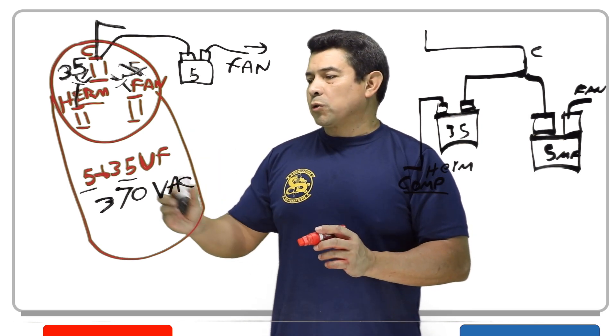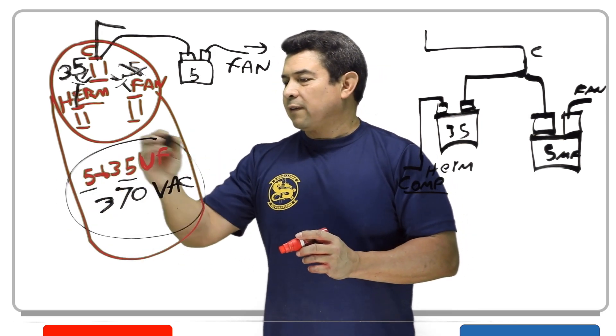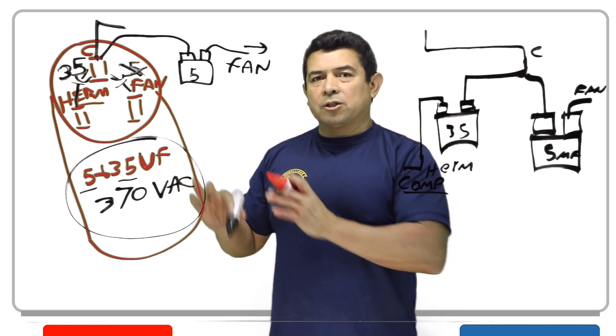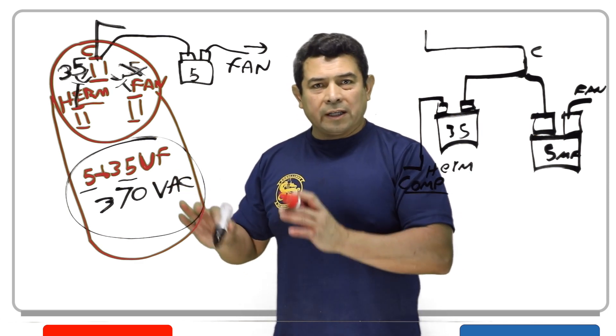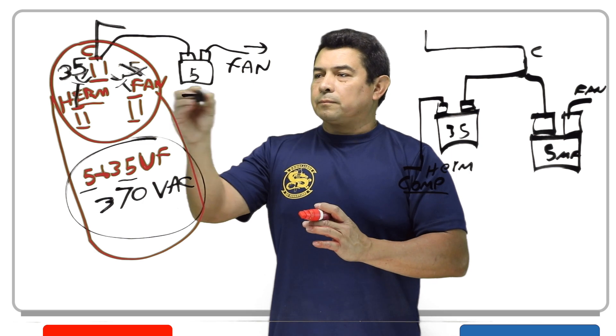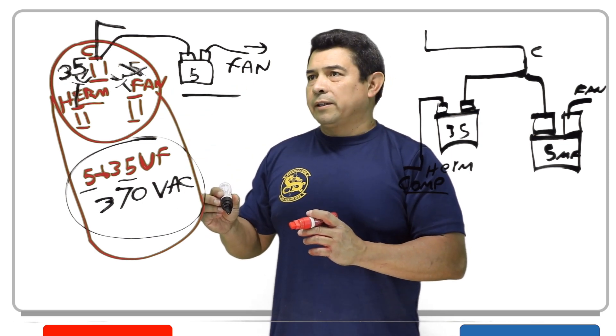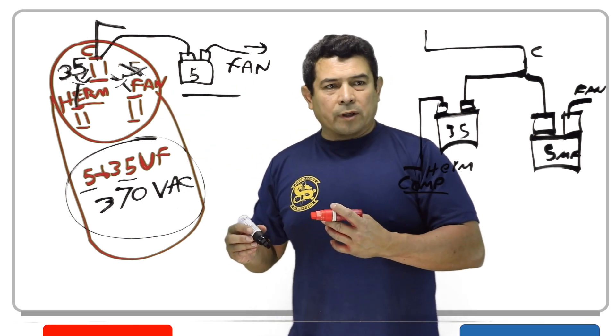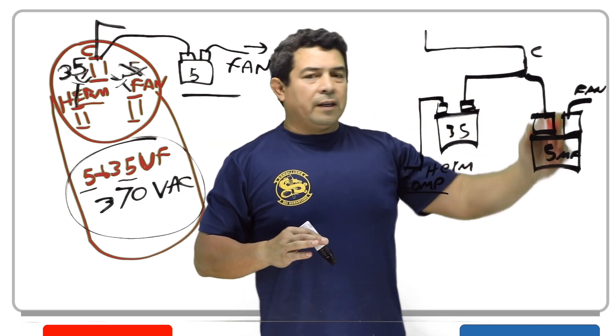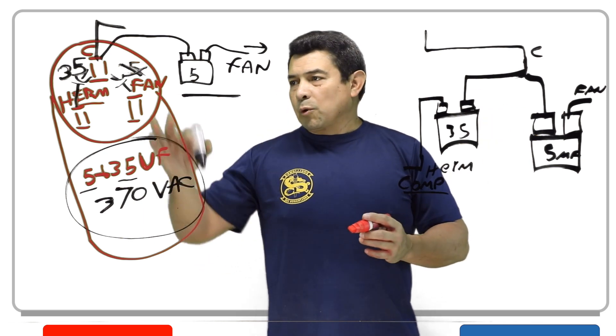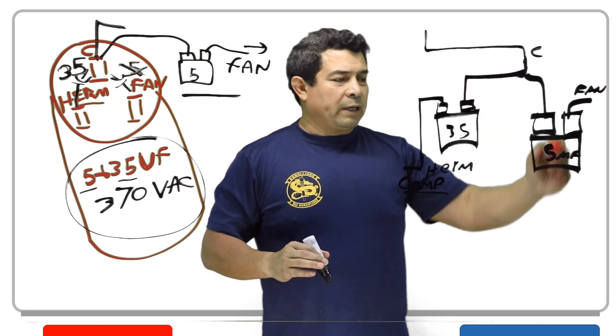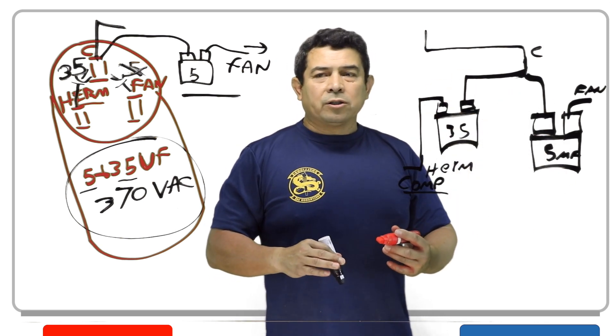The best thing to do would be to replace it with a 35 plus 5 microfarad capacitor, 370VAC, replace it just like it used to be. If you don't have that or you cannot get it, they have to have air conditioning right away, then you can do this. Just add a 5 microfarad right there, and that'll get it to work. If you happen to have a 35 and a 5, then you would do this. So, replacing the entire thing would be my first choice. Or, replacing it like this with two capacitors, that would be my next choice. The last choice would be just replacing this one like this.